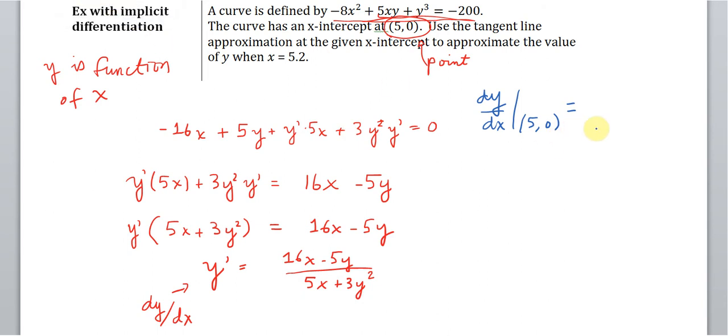Okay. So let's get back to the question. When we plug in 0 for y and 5 for x, we get 16 times 5 minus 5 times 0, all of this divided by 5 times 5.